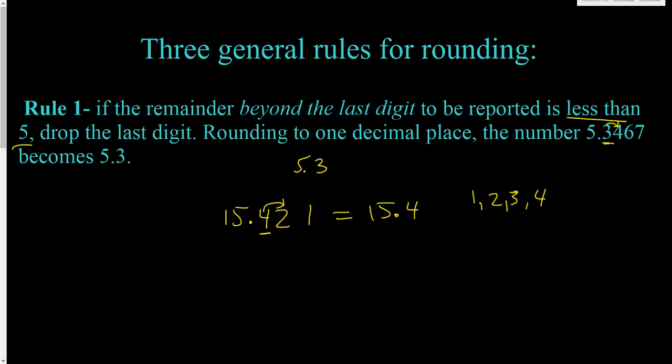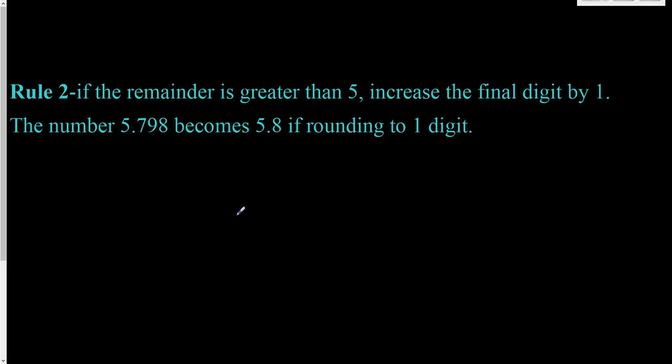Rule number two: if the remainder is greater than five, increase the final digit by one. We would say we bump that one up. So in this case we have 5.7, and we're rounding to one decimal place.